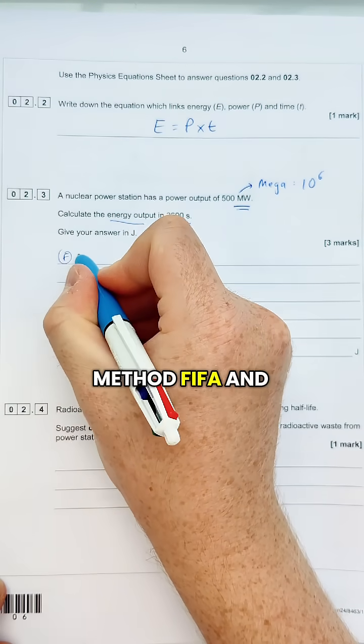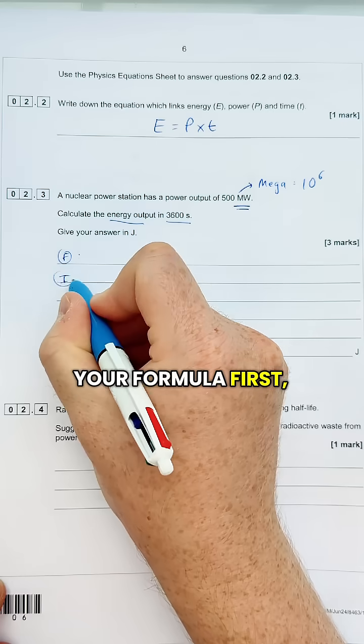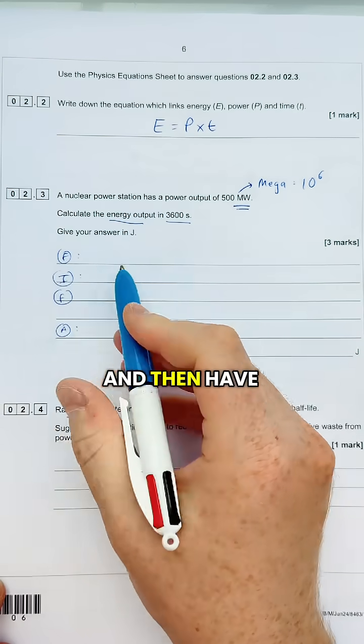So I like to use the method FIFA for doing this. Write down your formula first, insert values, fine-tune, and then have an answer.